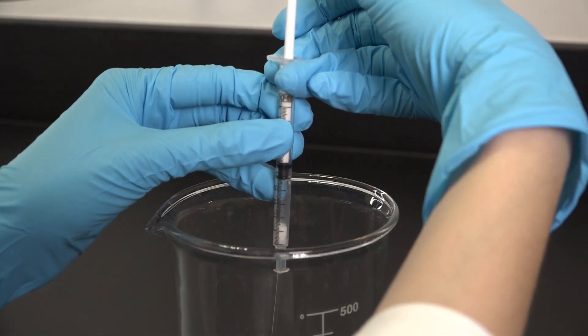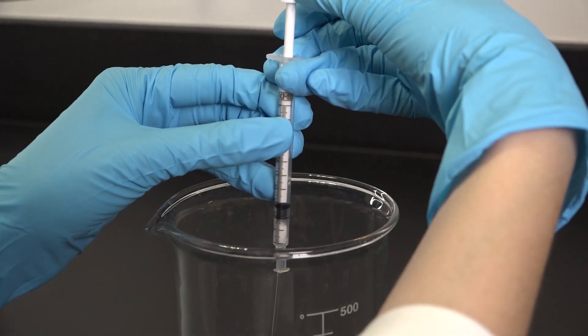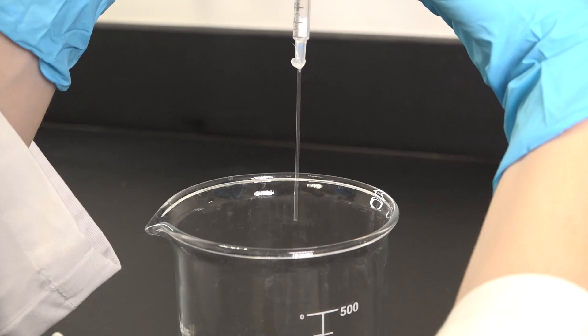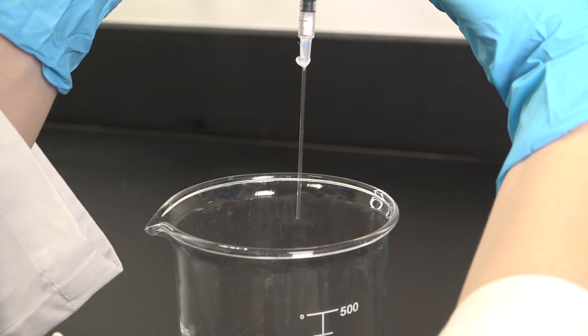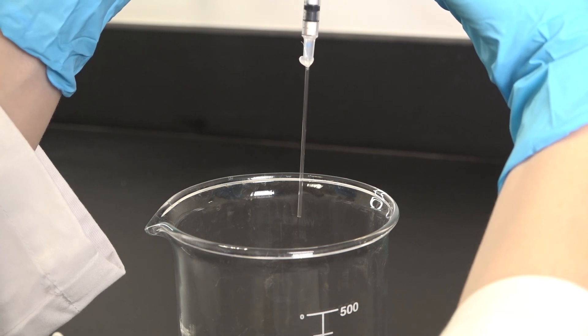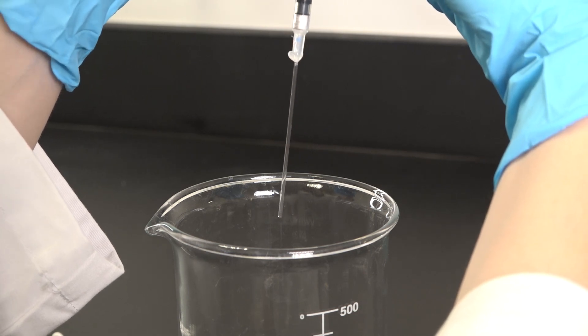Then I'll ever so carefully reinsert the plunger of the syringe. I'm reinserting the plunger over a beaker because there might be a little drop of potassium hydroxide that comes out of the capillary, and we do not want that squirting all over the place.